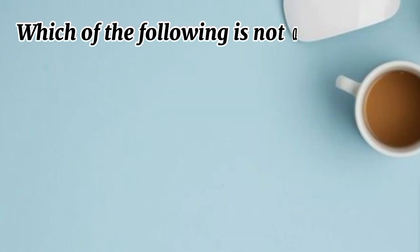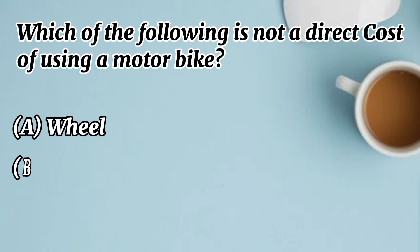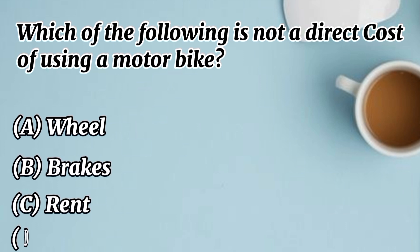Which of the following is not a direct cost of using a motorbike? The options are: wheel, brakes, rent, and petrol.